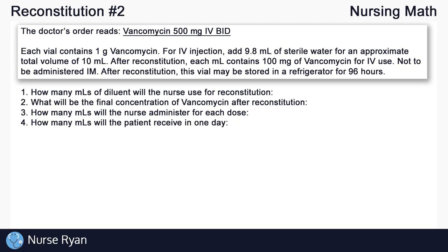Question number 1: How many mls of diluent will the nurse use for reconstitution? Diluent just refers to a substance used for diluting something, which in this case is sterile water. For this question, it's always a good idea to look back at the route of the order, which is IV or intravenous. Our vial information tells us that for intravenous injection, add 9.8mls of sterile water — that's how many mls of diluent we need for reconstitution.